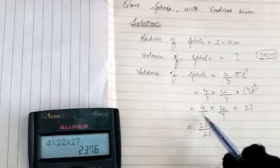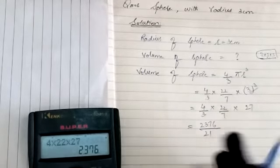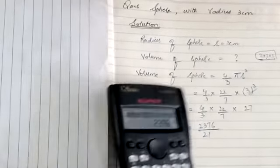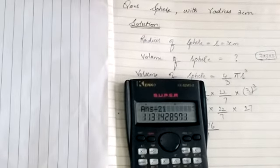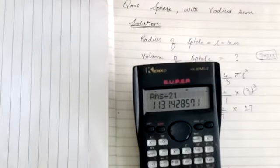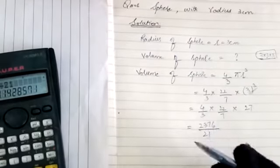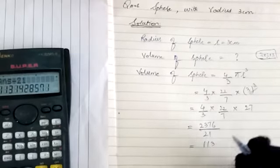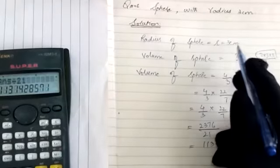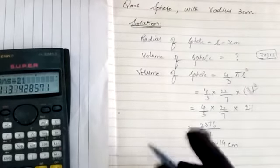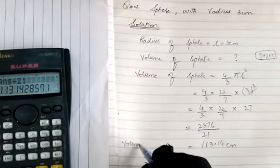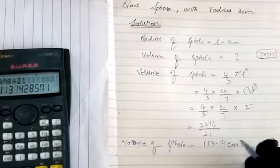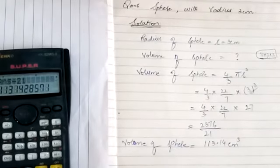If any students want to do cancellation — 3 ones are 3, 9s are 27 — that is also fine, it's up to you, whichever is easier. Dividing 2376 by 21 gives us the answer 113.14. Units are centimeters, so we write cm³ since it is volume. Volume of sphere = 113.14 cm³.